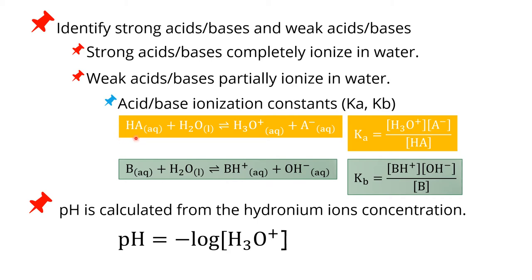Any weak acid ionizing in water will produce hydronium ion and its conjugate base. So Ka is equal to the hydronium ion concentration multiplied by the concentration of conjugate base, divided by concentration of the weak acid. For the base, ionizing in water gives its conjugate acid and hydroxide. So Kb is concentration of conjugate acid and hydroxide ion divided by concentration of the weak base.